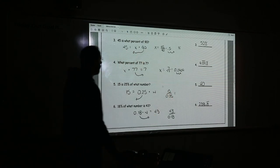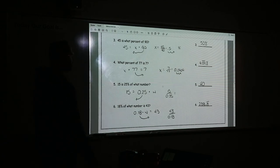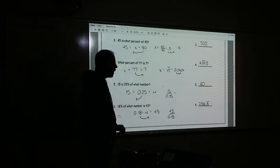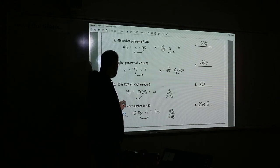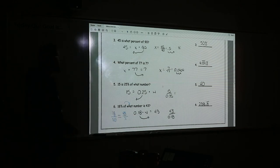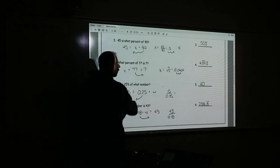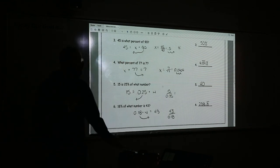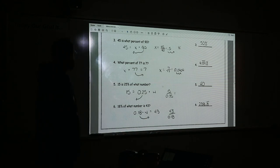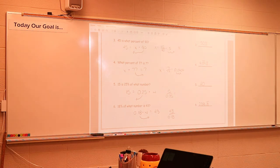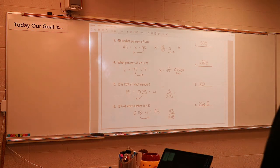Last one — number six: 18% of what number is 43? Divide 43 by 0.18 to get 238. With proportions: 18 over 100, 43 is the part, base is missing; cross-multiply and divide — still 238. That makes sense because 18% of a large group still gives you 43. Most common mistakes were just dividing the wrong number to the other side. Scores are already in the grade book so you can check online.